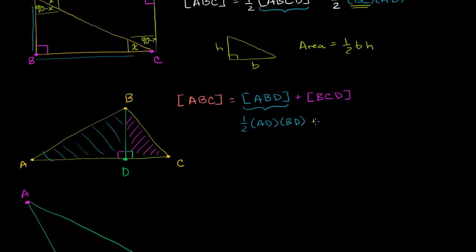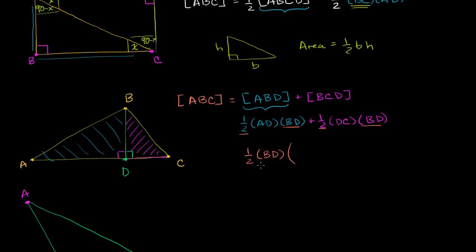Now let's find the area of the magenta triangle BCD. Once again it's a right triangle, so it's going to be one half times the length of the base DC times the length of BD again. Now we can factor out a one half and a BD from both of these terms. So we get one half times BD times the quantity AD plus DC.